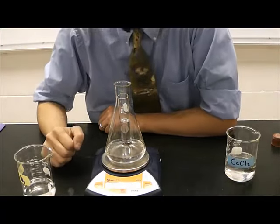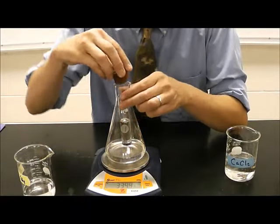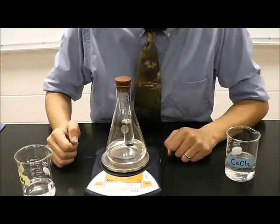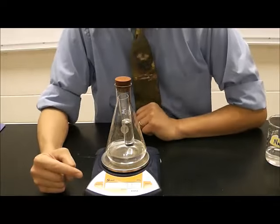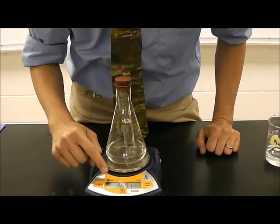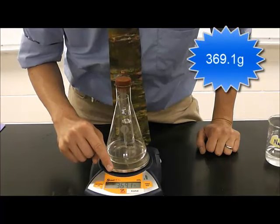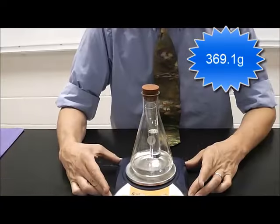Notice that the two chemicals are not mixing yet. I'm also going to use a stopper to close the top of the Erlenmeyer. And we are now going to note the current mass on the balance. You should be able to read that. It says 369.1 grams.